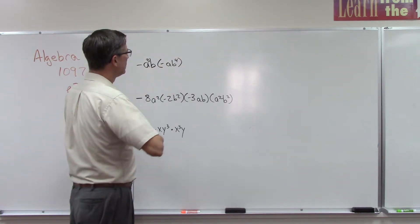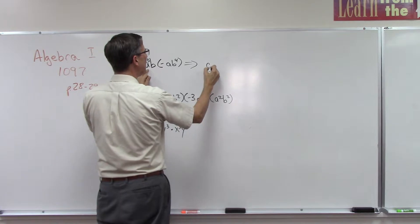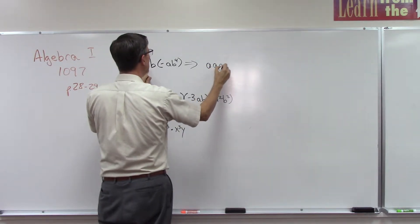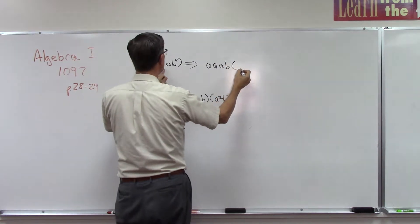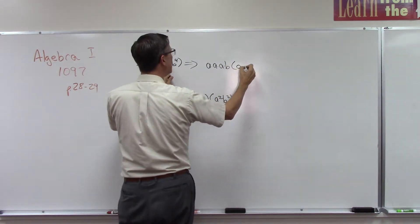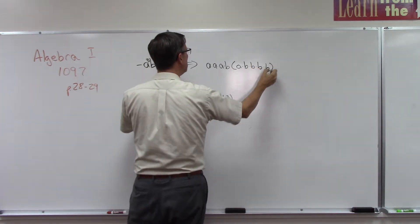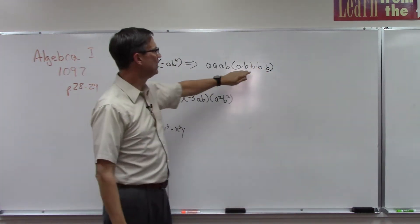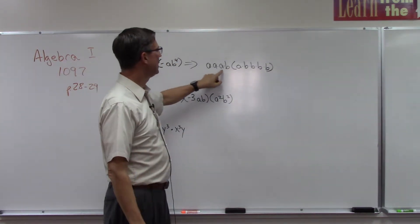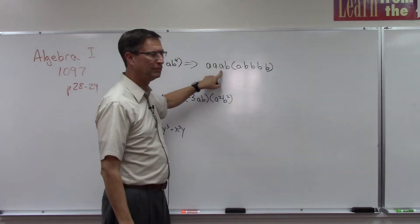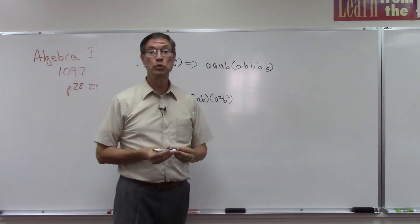If we spread this out, a to the third would be a times a times a times b, and then we have a and b times b times b times b, so b to the fourth is the same as b, b, b, b. So a to the third is a, a, a.